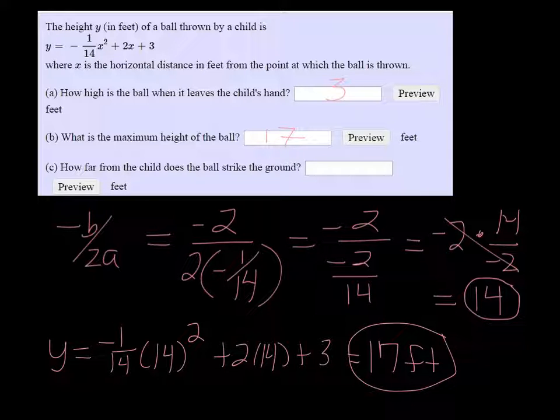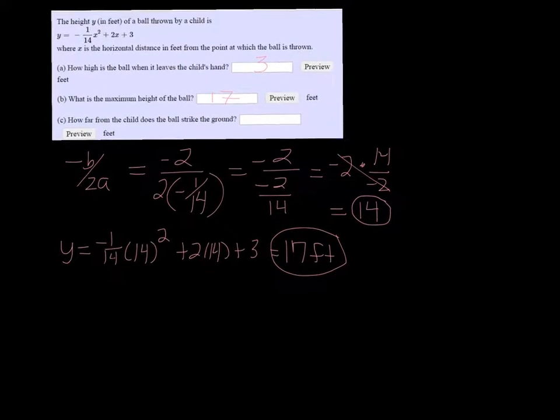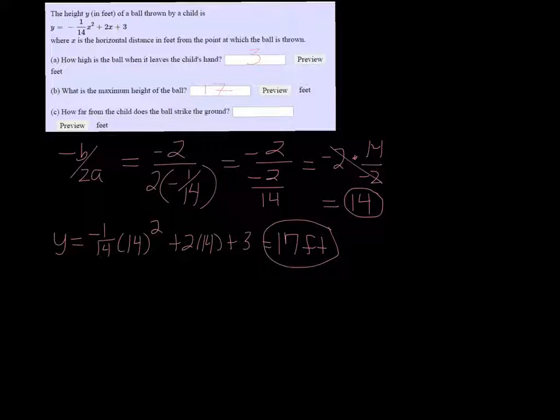And how far from the child does the ball strike the ground? So that's your horizontal distance, and that's when the height is 0, because when the ball hits the ground, the height is 0.